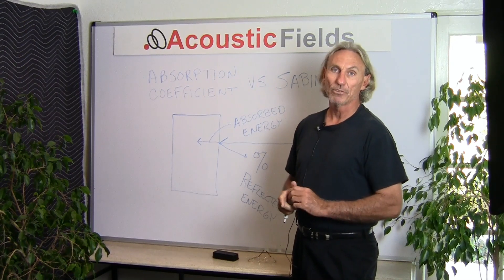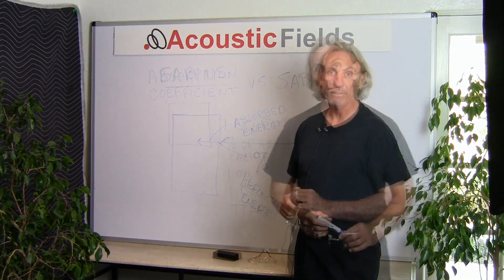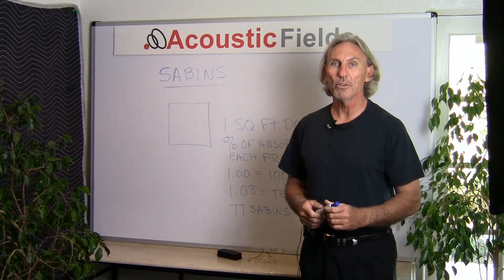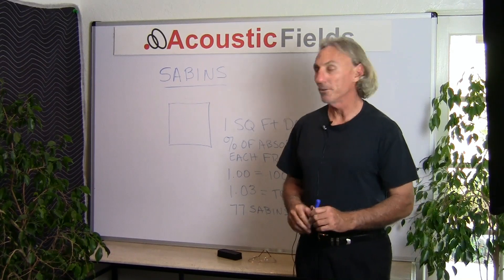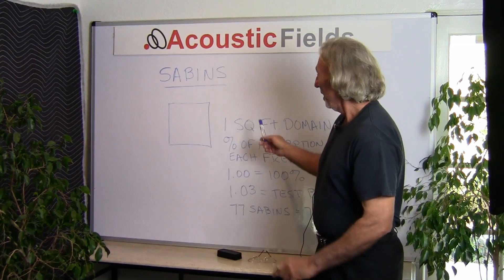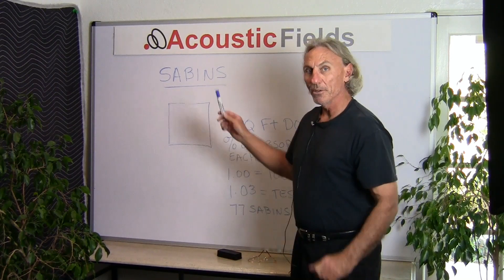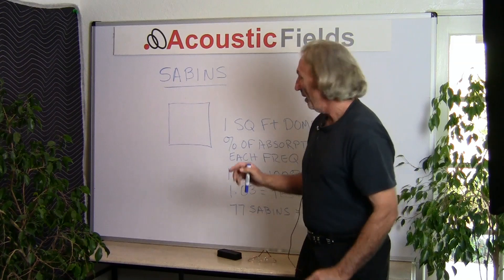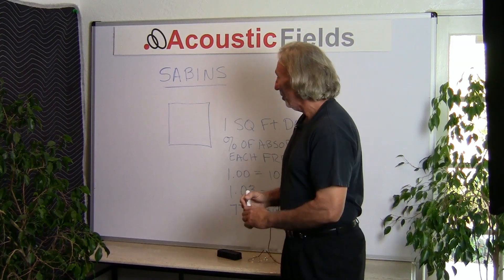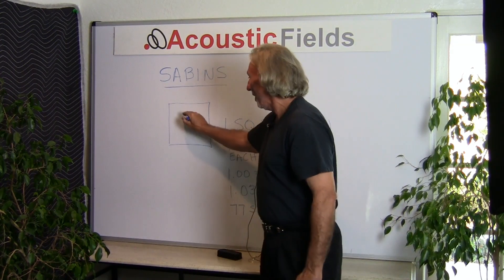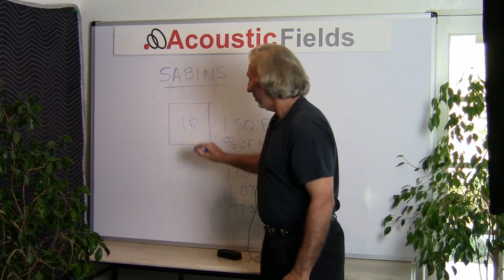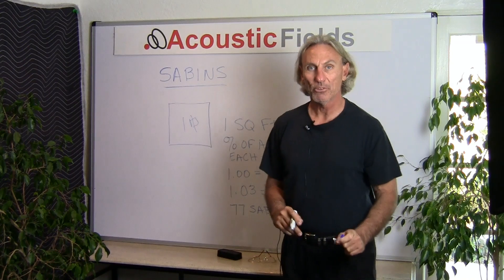Now let's look at Sabins. Sabins is a little bit smaller domain and we're going to work with just one square foot when we're talking about Sabins.